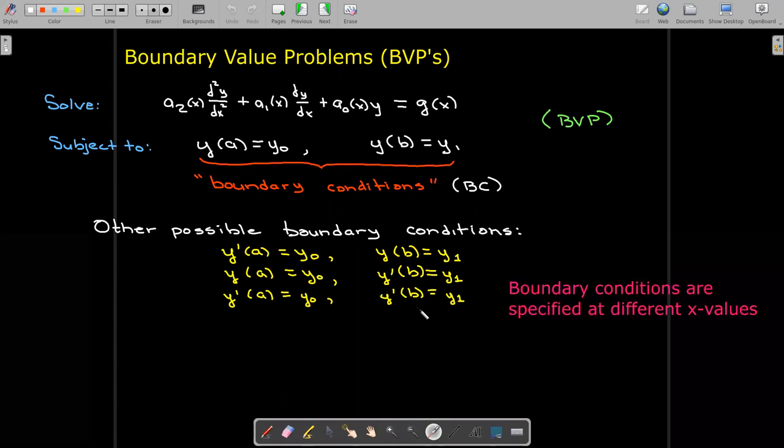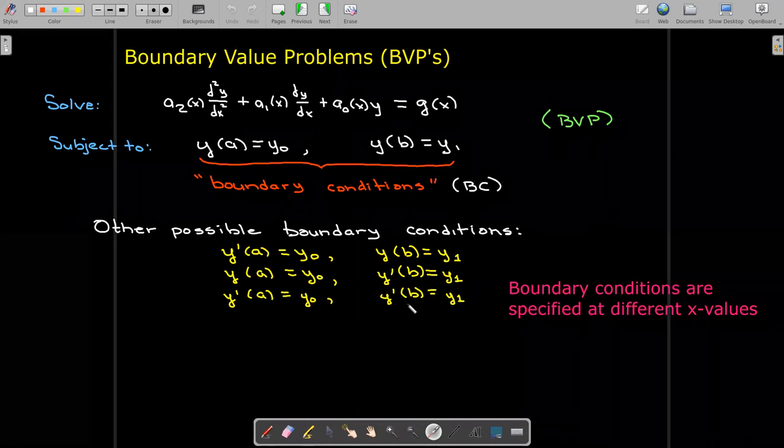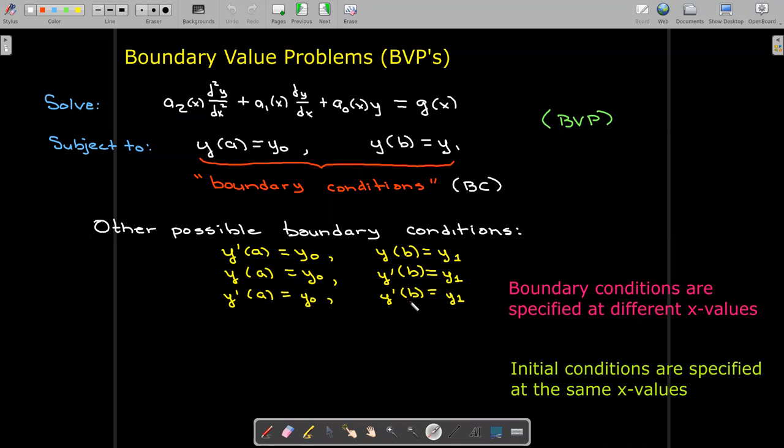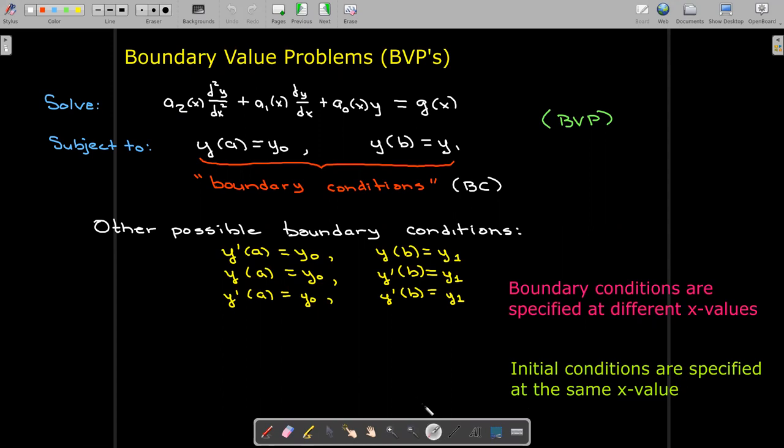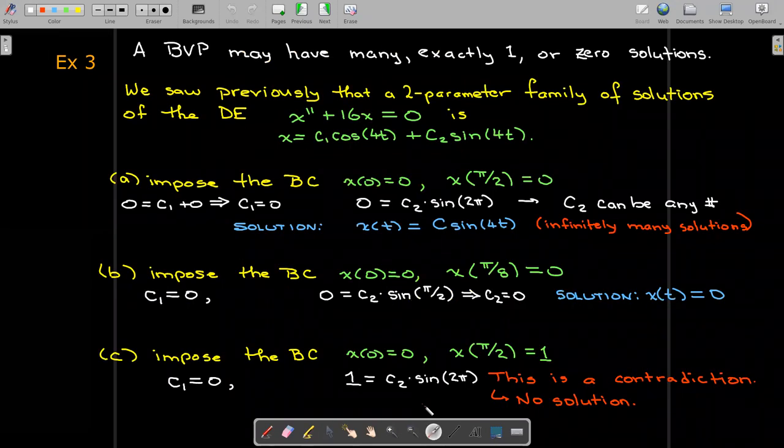So notice that the boundary conditions are specified at different x values, at x equals a and x equals b, but initial conditions are always specified at the same x value. So let me make that correction here. So we saw that every initial condition was defined at the same x value which we called x_0.